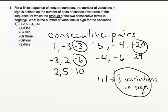So again, we find minus 3, minus 6, minus 20. Those are our negative products, therefore those are our variations in sign.